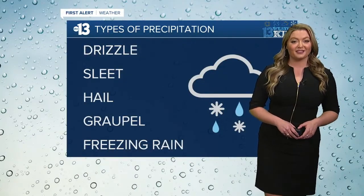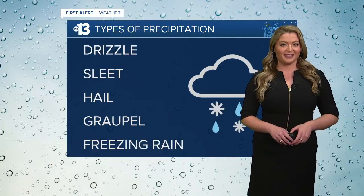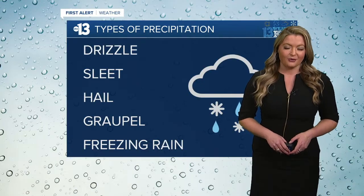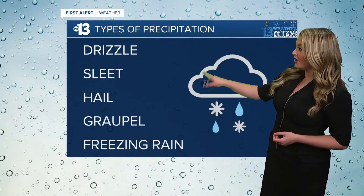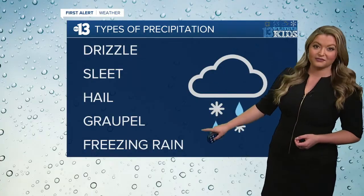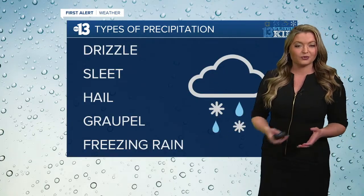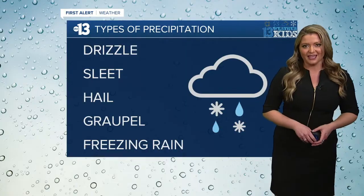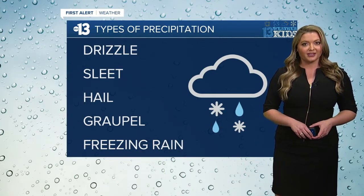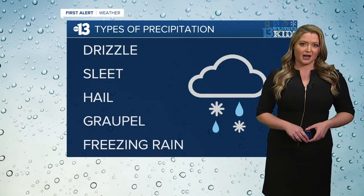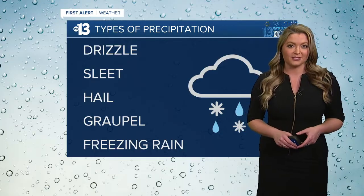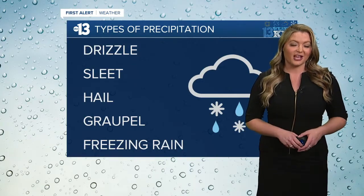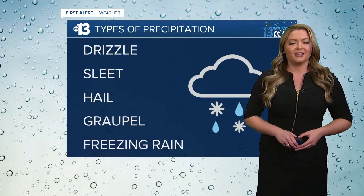I'm 13 Action News meteorologist Danny Beckstrom, and today we're talking about precipitation types. We all know rain and snow, but there's a long list of different types of precipitation, from drizzle and mist to sleet and hail, even freezing rain. They all form after water vapor condenses in a cloud, but the temperature of the air in the atmosphere as it falls to the earth dictates which type of precipitation it becomes.